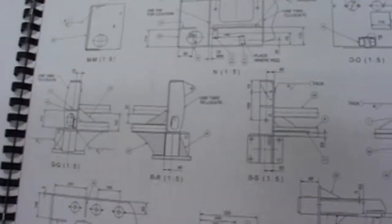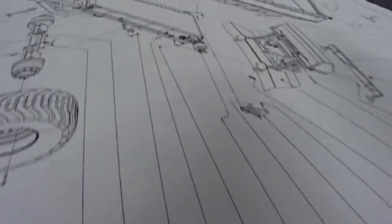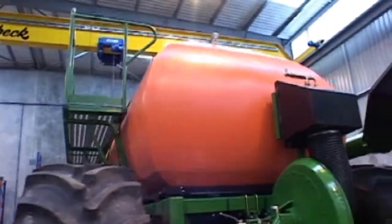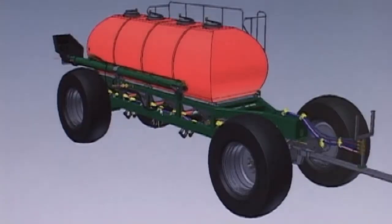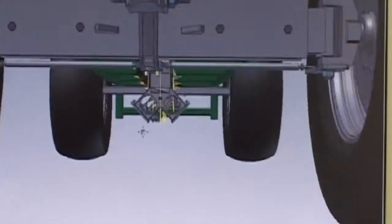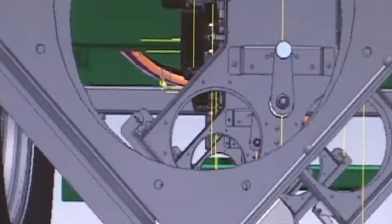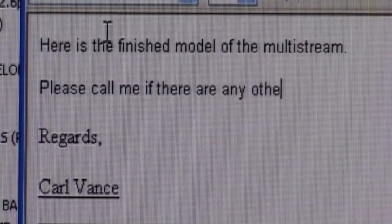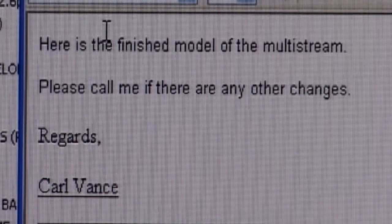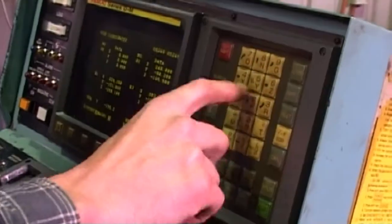All this information is presented in an international format so that anyone in the world can build or repair the machine. The data can be downloaded into a manufacturing machine that will automatically cut out the parts exactly like the computer model.